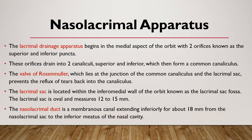To summarize, the nasolacrimal apparatus has a lacrimal drainage system beginning in the medial aspect of the orbit with two orifices known as the superior and inferior puncta. These drain into superior and inferior canaliculi which form a common canaliculus. The valve of Rosenmuller, at the junction of the common canaliculus and the lacrimal sac, prevents reflux. The lacrimal sac is located within the inferomedial wall of the orbit in the lacrimal sac fossa, formed by the lacrimal bone and the frontal process of the maxillary bone. The lacrimal sac measures around 12 to 15 millimetres, and the nasolacrimal duct extends approximately 18 millimetres inferiorly to the inferior meatus.